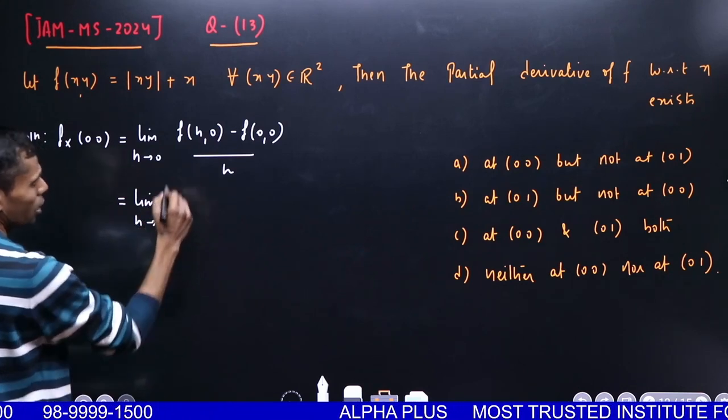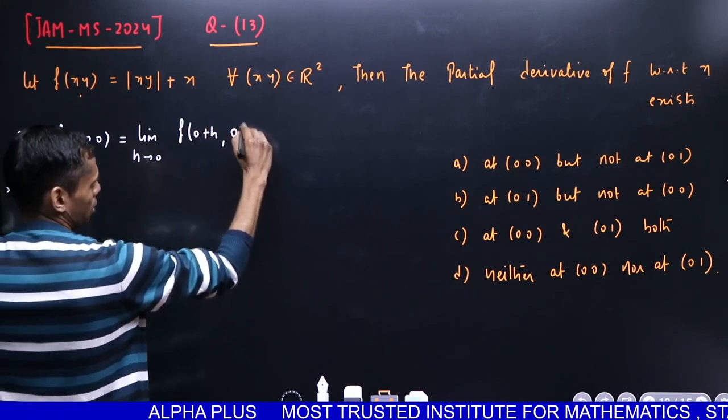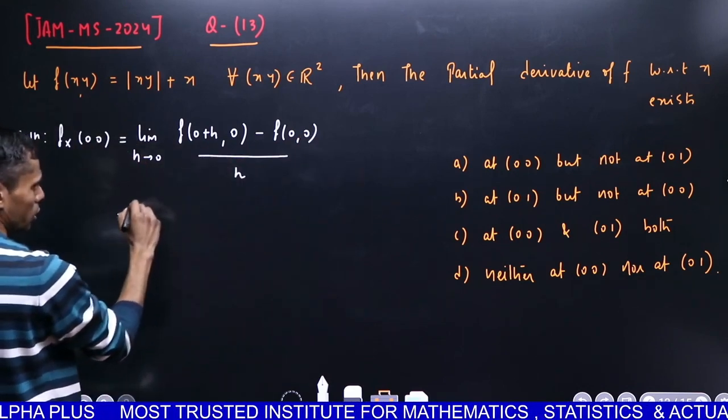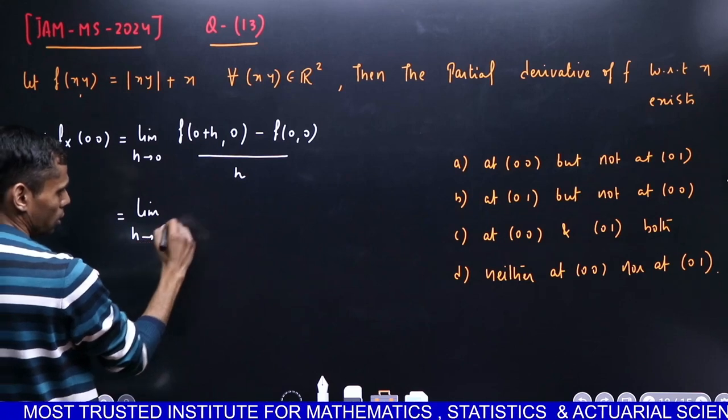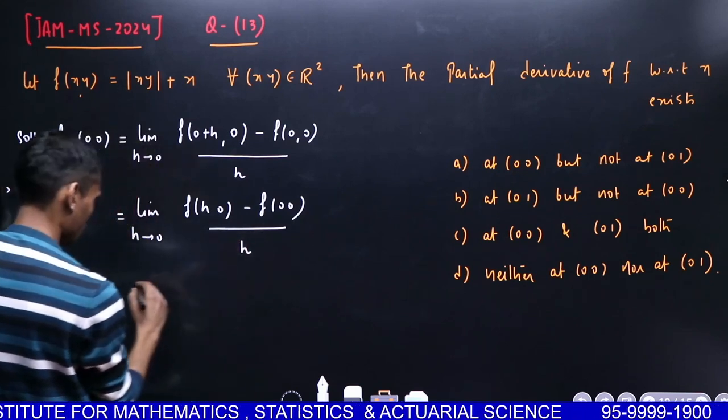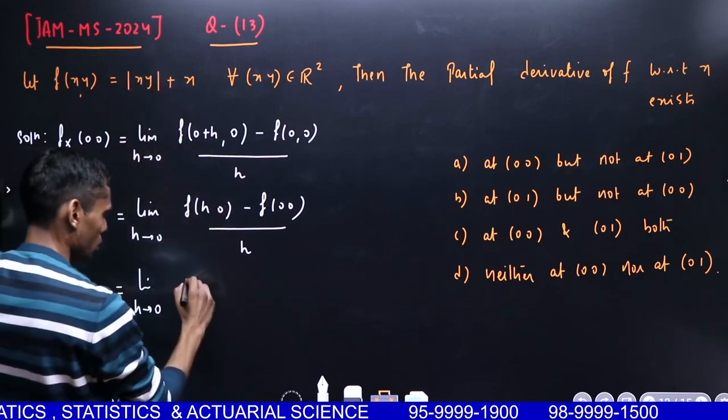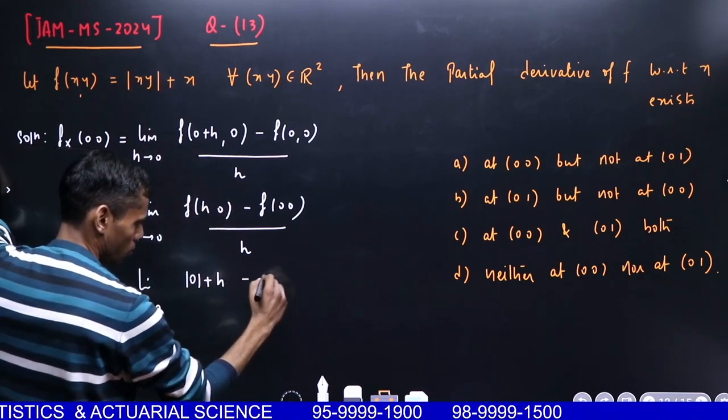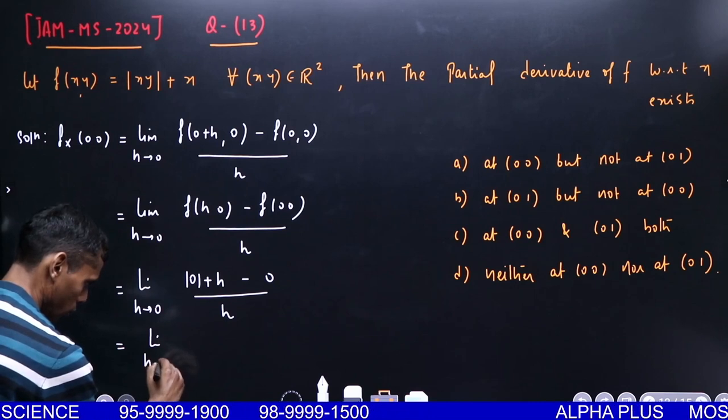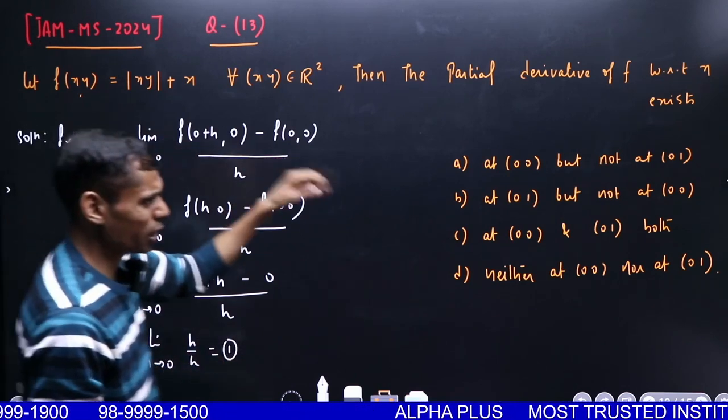So it is limit h→0 of [f(h,0) - f(0,0)]/h. Let me write fully: f(h,0), putting x = h and y = 0, gives |0+h| = |h|. So this becomes [|h|+h-0]/h.